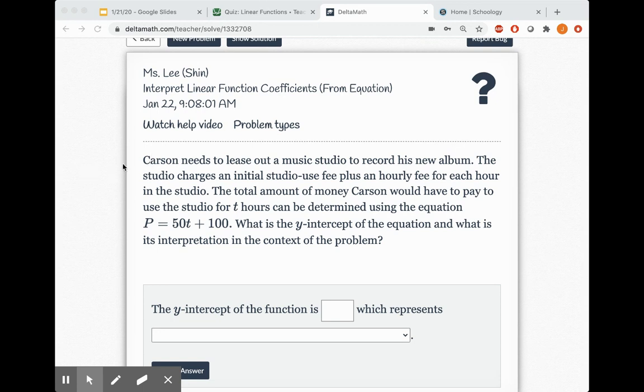So let me go ahead and read the problem for us. Carson needs to lease out a music studio to record his new album. The studio charges an initial studio fee plus an hourly fee for each hour in the studio. The total amount of money Carson would have to pay to use the studio for T hours can be determined using the equation P equals 50T plus 100.